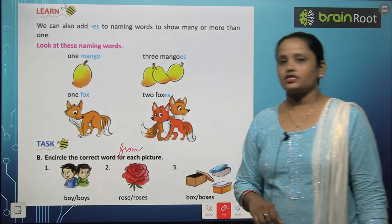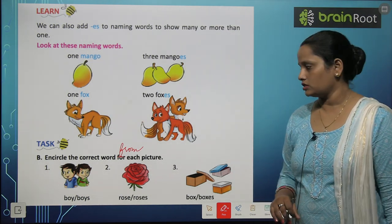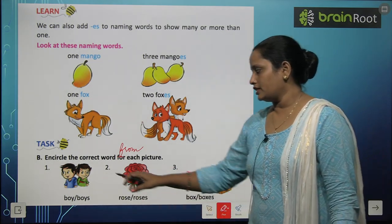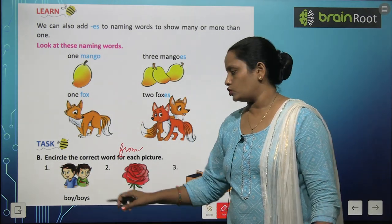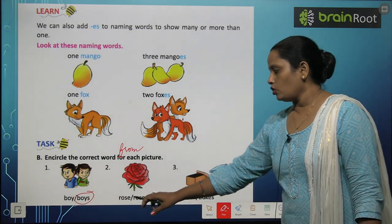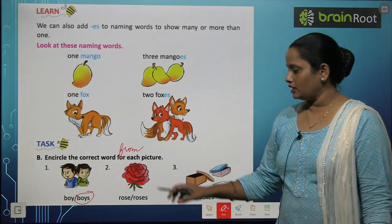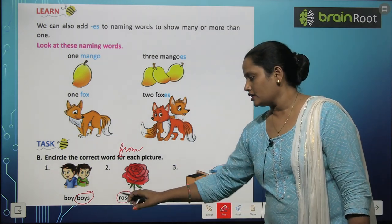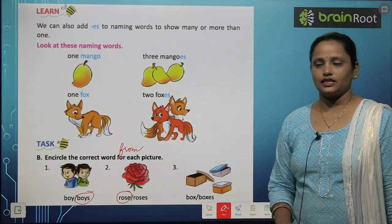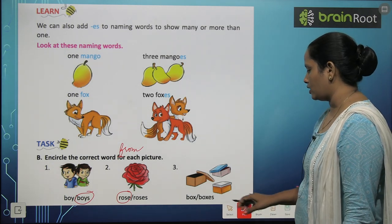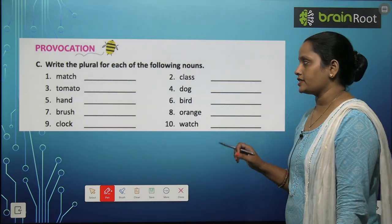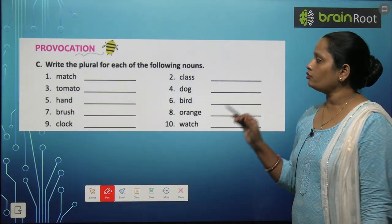Now let's do this exercise: encircle the correct word for each picture. From each picture we have to encircle the correct word. Boy or boys — kitne hain yahan pe? Two, toh boys ko circle karenge. Rose or roses — kitne rose hain? One, toh hum rose ko circle karenge. Box or boxes — kitne hain? Toh boxes ko circle karenge.